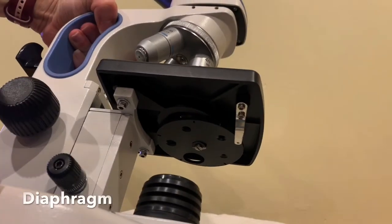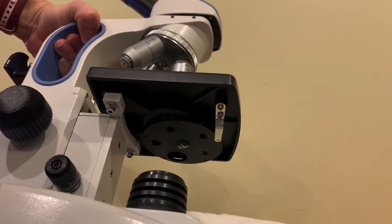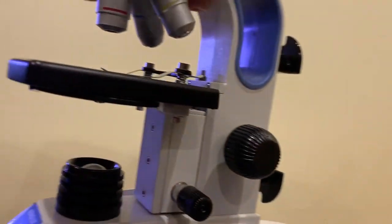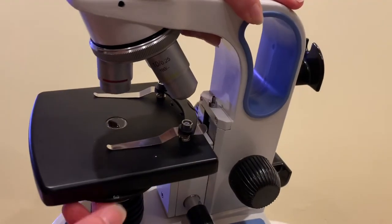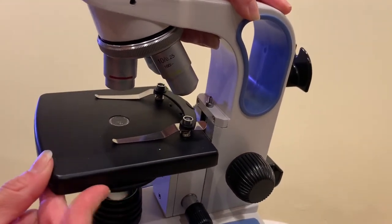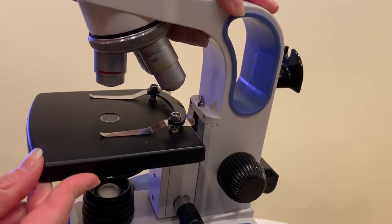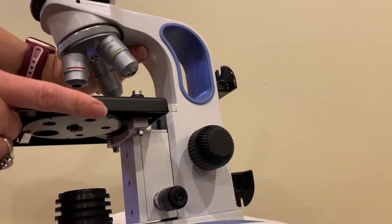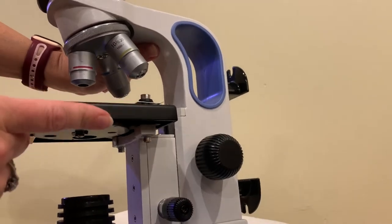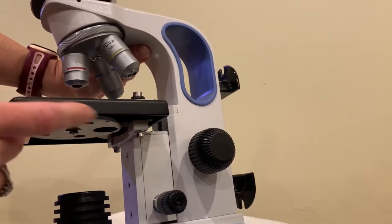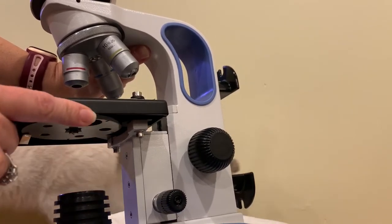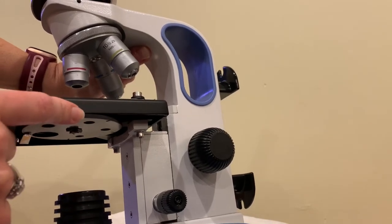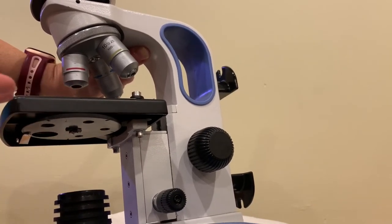Next we have the diaphragm. So the diaphragm is kind of under here and from this side, here you can see there are some numbers three two one. Underneath you will see five holes of different diameters. The diaphragm is used to vary the light that passes through the stage opening and helps to adjust both the contrast and resolution of a specimen. So you can rotate the diaphragm based upon whatever your sample looks like if you think you need a little more light or a little less light.